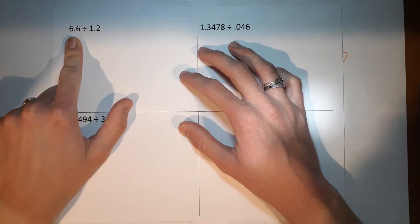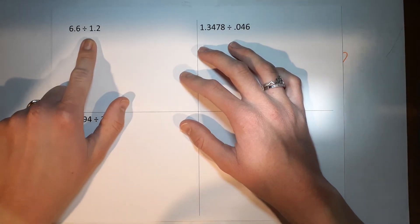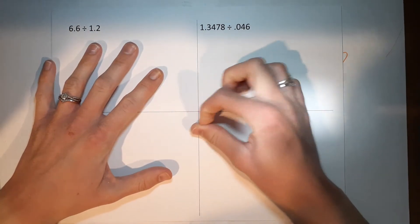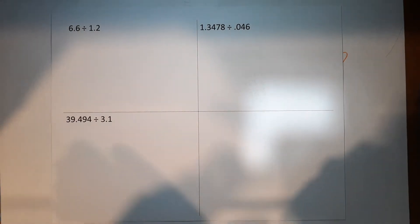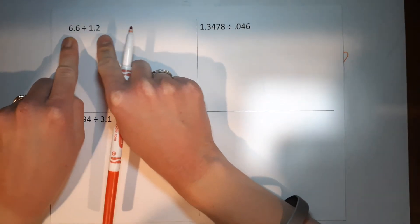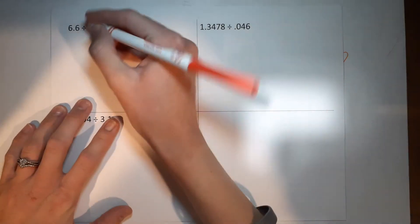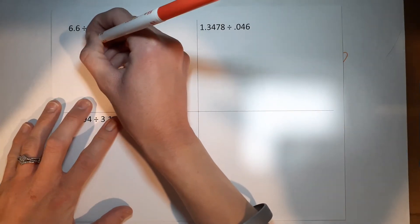6.6 divided by 1.2. This might look intimidating, but we can do it. When we have a division problem written like this, we are going to use long division.